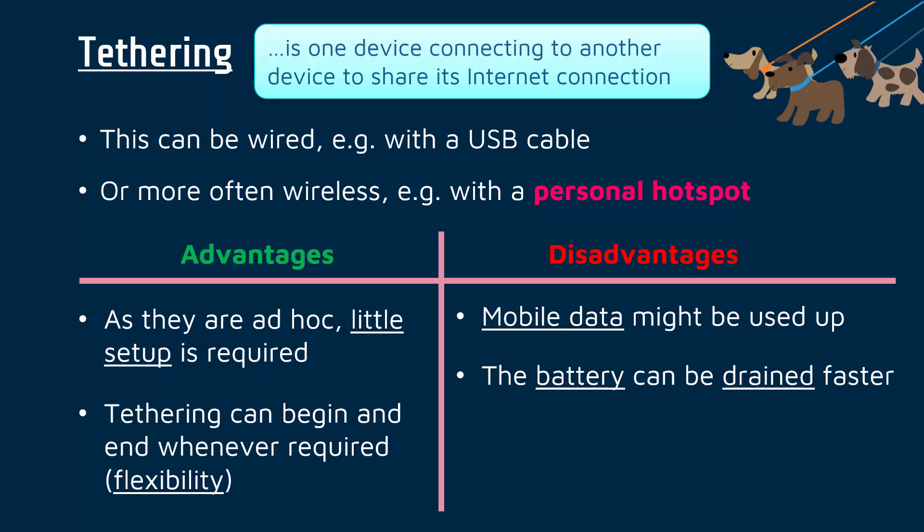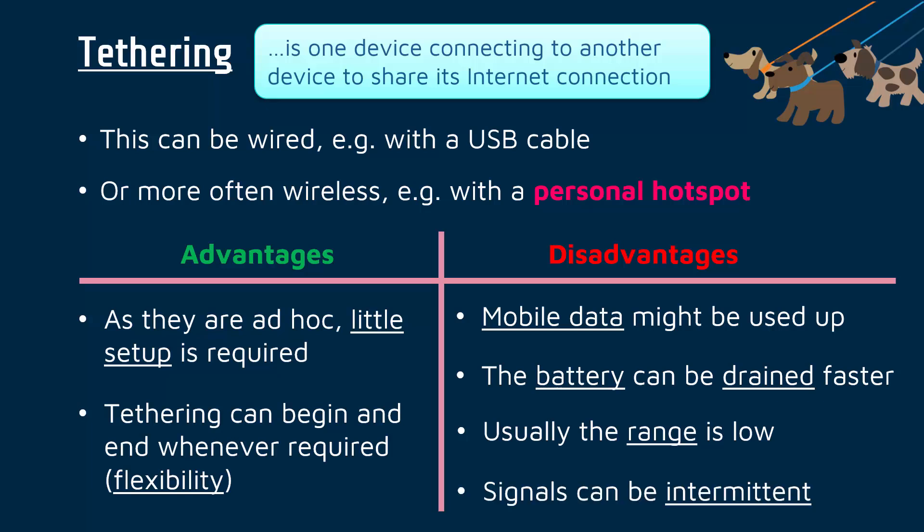Because your phone or tablet or laptop is having to broadcast a signal, the battery will get drained a lot faster as it's having to do more work. And because the devices used for tethering are not designed primarily as broadcast devices — they're designed to be phones or tablets, not routers — the range of the signal is generally quite low. For a wireless hotspot, you usually can't move very far away from the device being used.